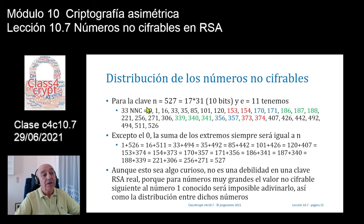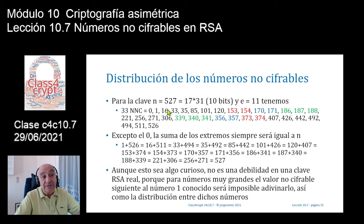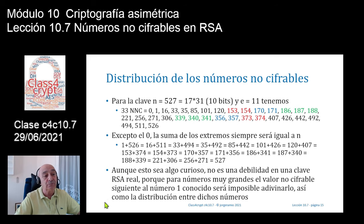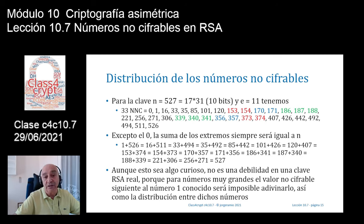Para números pequeños es casi fuerza bruta: pruebo si el 2, el 3, el 4, el 5... no, no, no. Pero cuando cifro el 16 elevado a la clave pública módulo N, me sale el 16, y así lo hago con todo. Descubrir el siguiente número que viene después del 1 va a ser muy difícil para claves grandes, y para claves reales hoy en día de 2048 bits va a ser totalmente imposible porque esos números no van a existir como tales. Lo veremos a continuación.